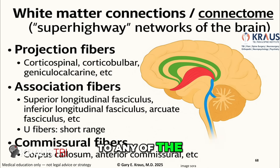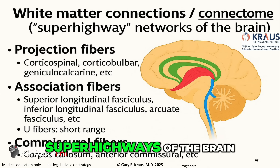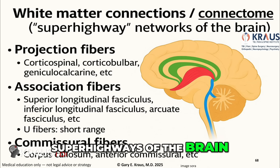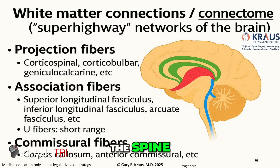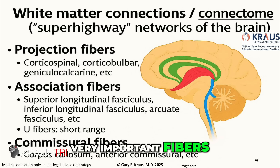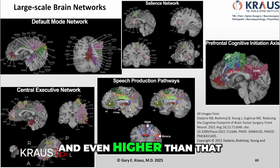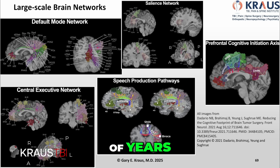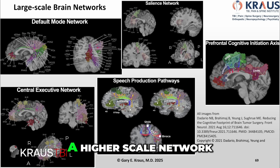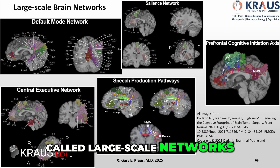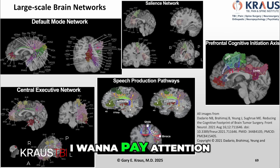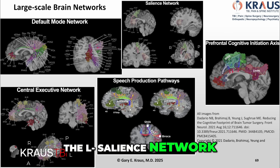Without focusing on the names of these fibers, I want to indicate that these are the super highways of the brain. They connect fibers going front to back, side to side, and top down to the spine — very important fibers. And over the last number of years, we've been able to appreciate an even higher-scale network called large-scale networks. In particular, I want to highlight the salience network.